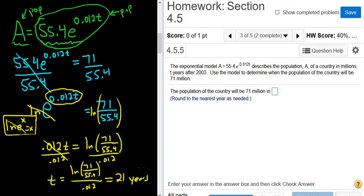But we want to know what year it will be. This tells you the population T years after 2003, so we add 21 to 2003. That gives us 2024.